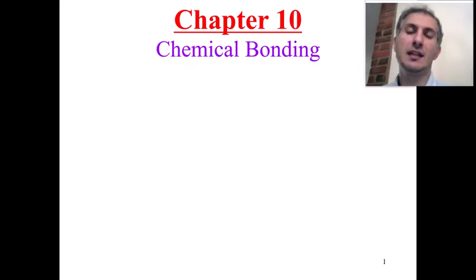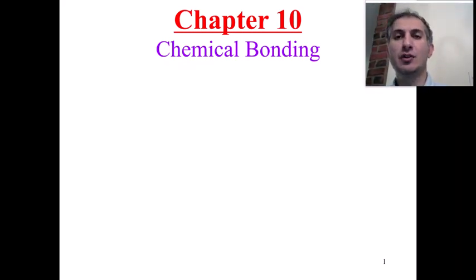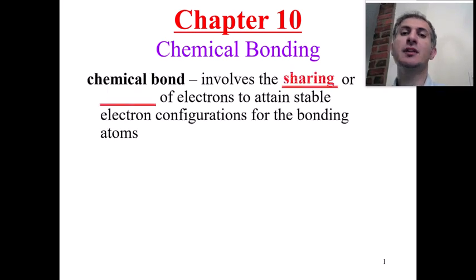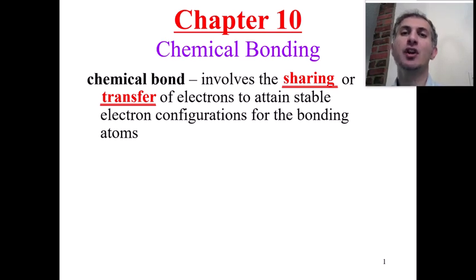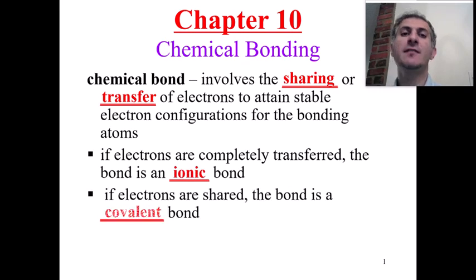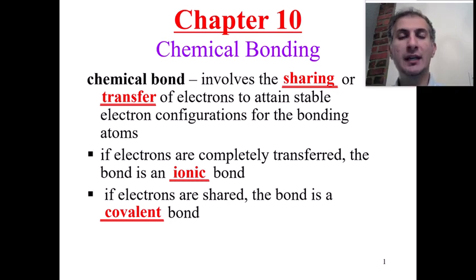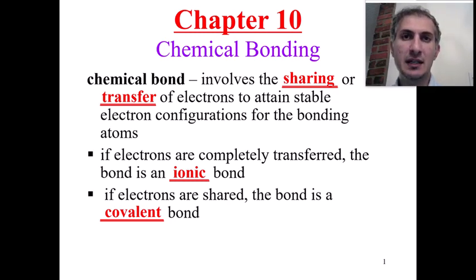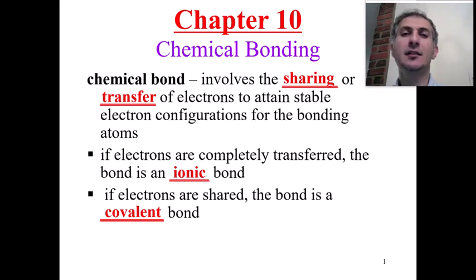Hello everyone. For today's video I'm going to talk about chapter 10: chemical bonding. In chemistry we have two types of bonding: sharing and transferring. Whenever electrons share between two non-metals we call it covalent bonds, and whenever electrons transfer from metals to non-metals we call it ionic bond. So in chemistry we have two types of bonds: ionic bonds and covalent bonds.